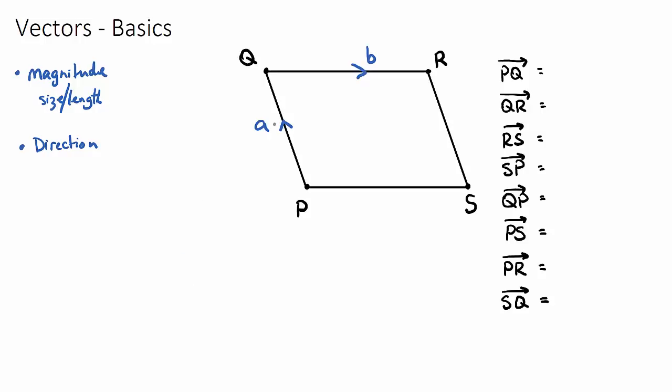In this diagram here, the vector A will be from P to Q, and that's actually different to the vector that would go from Q to P because it would be the same length but in the opposite direction. It's actually going to be negative A as a vector.